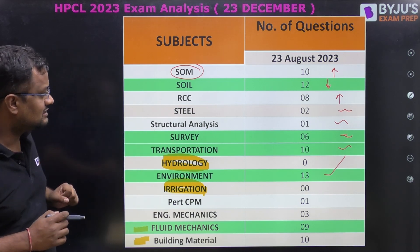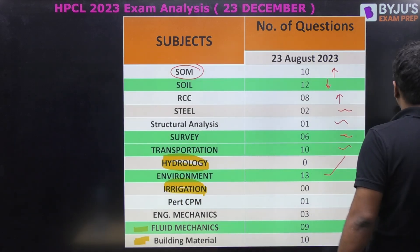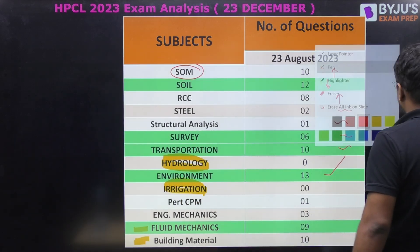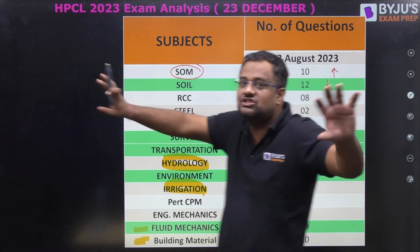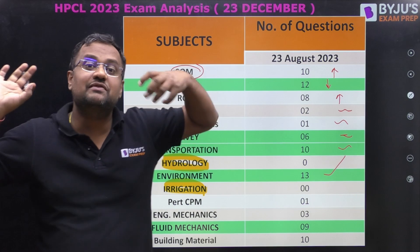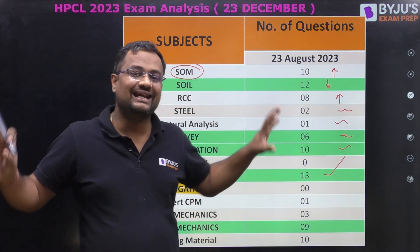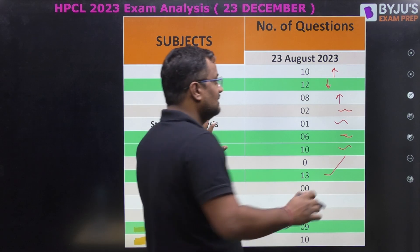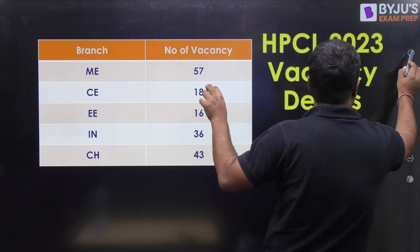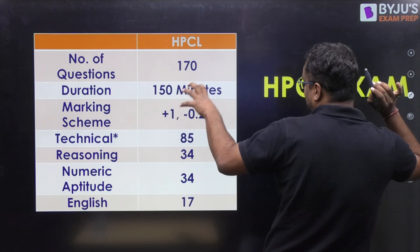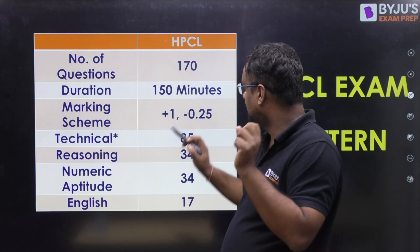Overall, if you compare this paper with GATE, it is very easy — you can score well. The wide range of topics is the challenge since 170 questions cover 170 different topics. But the questions themselves are not difficult. The number of vacancies is 18 this time. Importantly, negative marking has been introduced for the first time by HPCL.